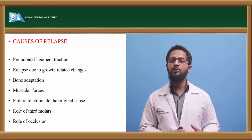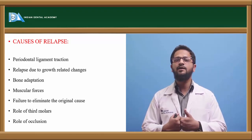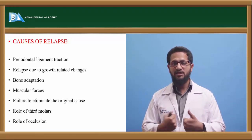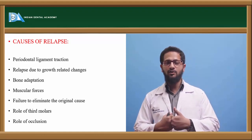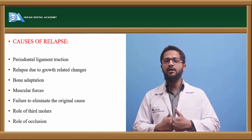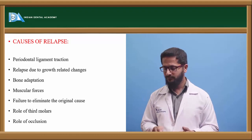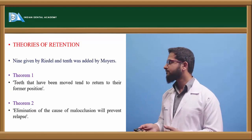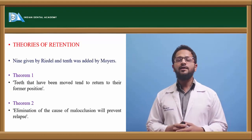The seventh cause is the role of occlusion. As Kingsley stressed, occlusion is a potent factor in maintaining stability. Proper occlusion must be achieved before concluding treatment — there should be tight contacts and good interdigitation between the upper and lower teeth.